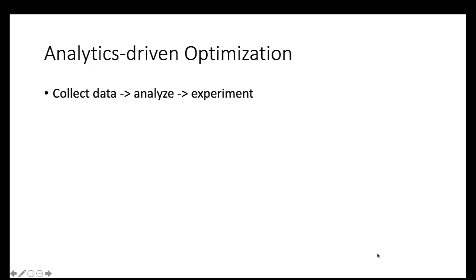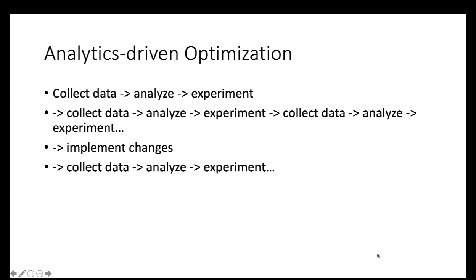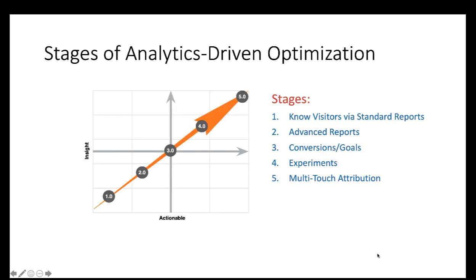So what does the analytic-driven optimization process look like? First we collect data, then we analyze the data, then we design something new and experiment with it. But it doesn't necessarily mean it's a better design, so we go back to collect more data, analyze more, and experiment more. That process continues until we find the winning design, then we implement the changes — but we don't stop there; we keep collecting data, analyzing, and experimenting.